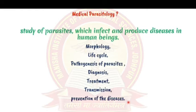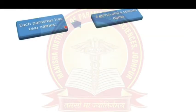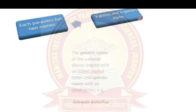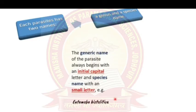Each parasite has two names: a genus name and a species name — for example, Entamoeba histolytica or Ascaris lumbricoides. The genus name is written with an initial capital letter, and the species name is written in small letters — for example, 'histolytica' is in lowercase.